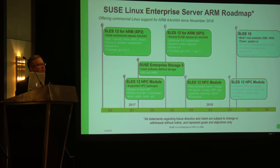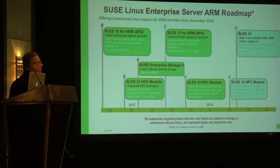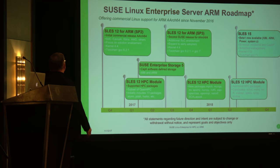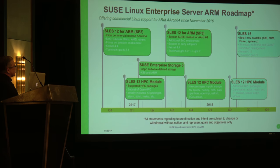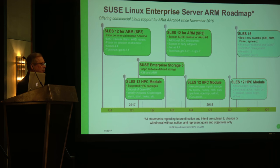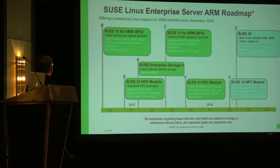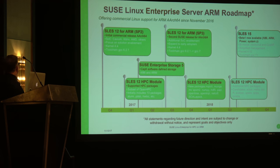As far as ARM goes, we shipped our first release of SUSE Linux Enterprise for ARM last year in November, so it's basically been a year now. We supported a number of different SOCs, including the Cavium ThunderX in that initial release, as well as some others — you'll see a clearer chart in the next slide.